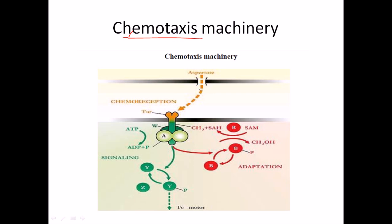The Chemotaxis Machinery of bacterial flagella is divided into two different parts. One part is the controlling or movement of flagella, and the second part is sense adaptation. So it is made up of these two parts: one is the movement of flagella and the second one is sense adaptation. Let's talk about the movement of flagella first.